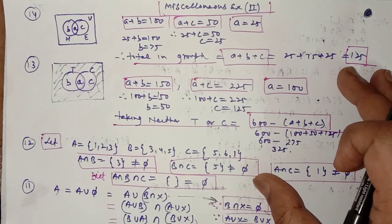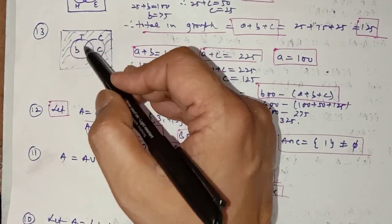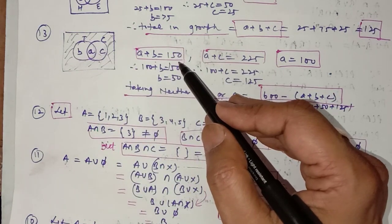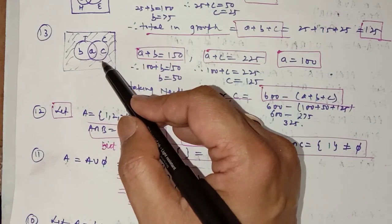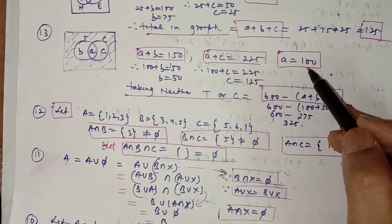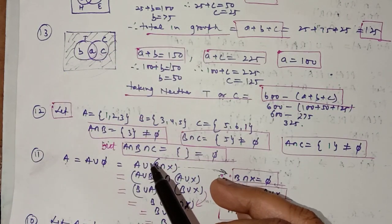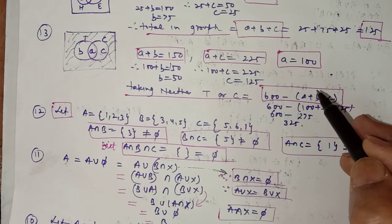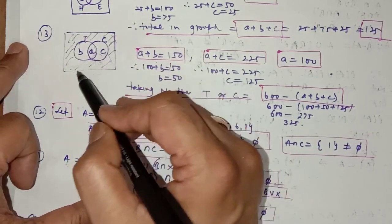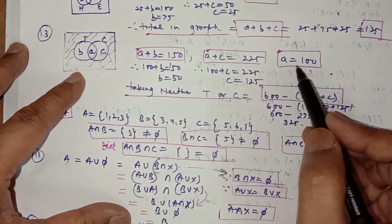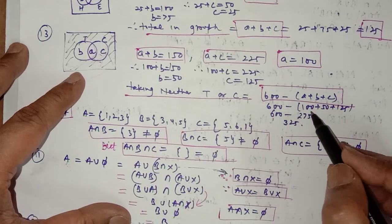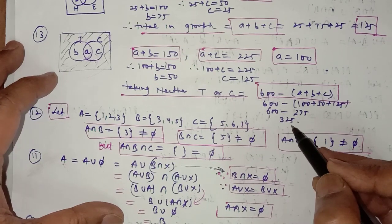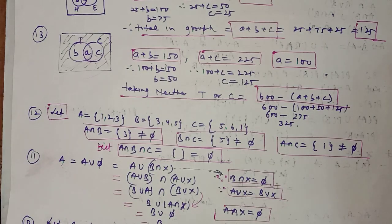In question number 13, in a survey of 600 people in a school, 150 students were found to be taking tea: a + b = 150; taking coffee: a + c = 225; taking both: a = 100; the total survey is 600. You have to find how many take neither tea nor coffee. Find a + b + c: substituting gives 100 + 50 + 125 = 275. Subtracting from 600 gives 325 persons taking neither tea nor coffee.